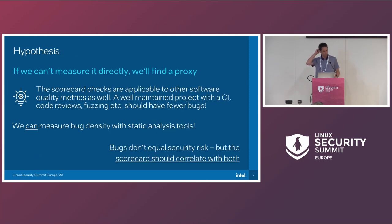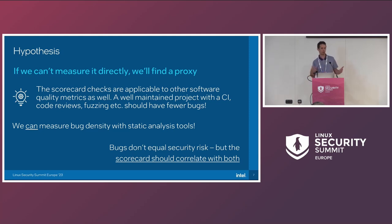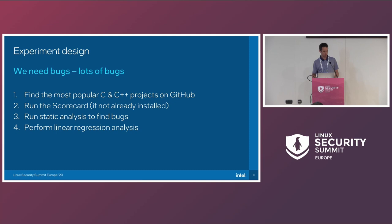If we can't measure security risk directly, we need a proxy. If we rationally think about it, if a project is well maintained, has code reviews, static analysis, and fuzzing, we'd reasonably expect it to have fewer bugs. And we can measure bugs in repositories using static analysis tools — we've been doing that for C and C++ for many years. While bugs don't actually correlate directly with security risk, the factors the OSSF Scorecard considers should correlate with both if it actually works.